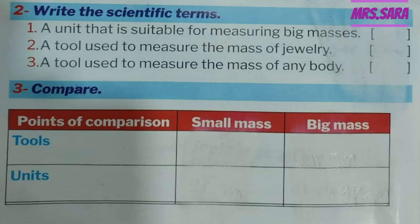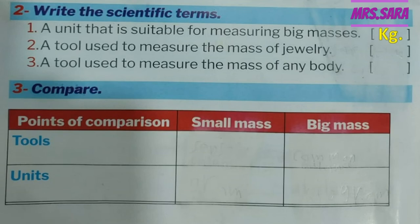Question 2: Write the scientific term. Number 1: A unit that is suitable for measuring big masses — the unit of big masses is kilogram. Number 2: A tool used to measure the mass of jewelry. Jewelry like ring, bracelet, or necklace — they are small masses. So we need the measuring tool of small masses, which is the sensitive balance.